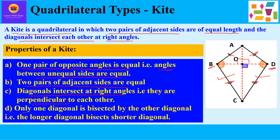The fourth property is that only one diagonal is bisected by the other — that is, the longer diagonal bisects the shorter diagonal. As you can see in the figure, AC is the longer diagonal and BD is the shorter diagonal. AC bisects BD, which we proved in part four, where BO is equal to DO. So from this one question, we can derive all the properties of a kite.